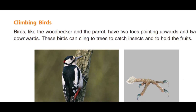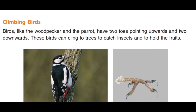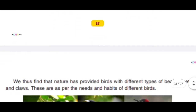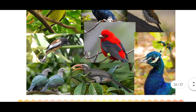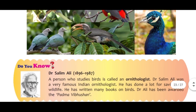Climbing birds: Birds like woodpecker and parrot have two toes pointing upwards and two downwards. These birds can cling to trees to catch insects and to hold fruits. Parrot and woodpecker ke feet unki zaroorat aur habits ke anusar shaped hote hain. Isi prakar hum birds ke feet and claws ke baare mein samjhe aur pata chala ki yeh unke food habits ke liye kis prakar helpful hain.